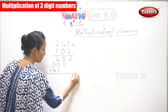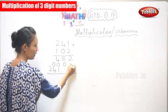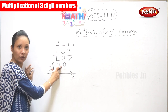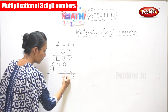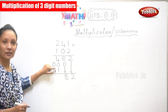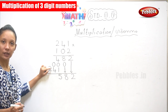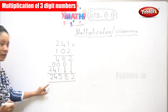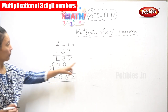Now you have got your 3 steps. You are supposed to add these 3 numbers. So you need to write the 2 here. 8 plus 0 is 8. So 4 and 1 is 5. 0 and 4 is 4. So the answer is 24,582. This is your answer for this multiplication.